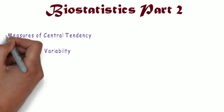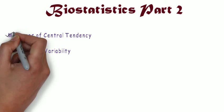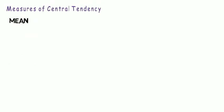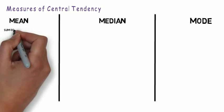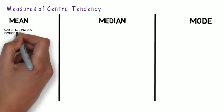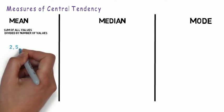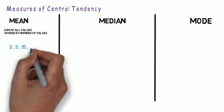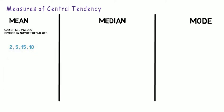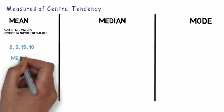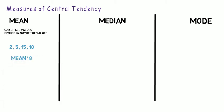First up is Central Tendency. Measures of Central Tendency include Mean, Median and Mode. Mean is the sum of all values divided by the number of values. For example, say I give you 4 numbers: 2, 5, 15 and 10. We add them up and the sum is 32. Dividing by 4, since there are 4 numbers, we get 8, which is the mean.